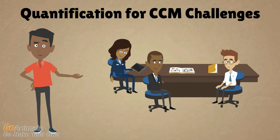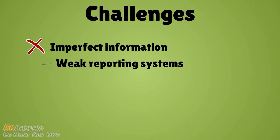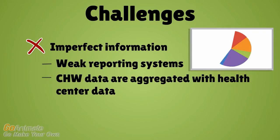Ideally, quantification for CCM should be straightforward, but there are often challenges with the data needed. Frequently, CCM programs have imperfect information. Data may be incomplete due to weak reporting systems, and community health worker logistics data are often aggregated with health center data before reaching the central level, making it difficult to quantify CCM-specific product needs.